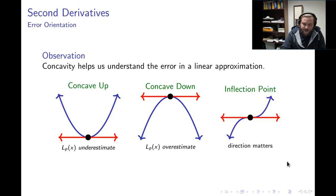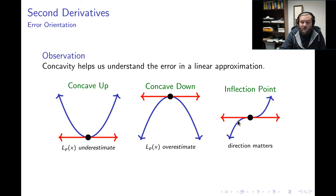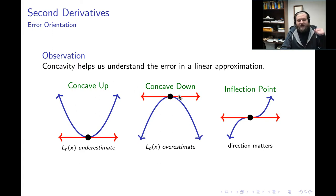The third situation is an inflection point. At an inflection point, the direction you're traveling in matters. In the figure depicted here, if we move a little to the right, we may be an underestimate, but if we move to the left, perhaps an overestimate. So at inflection points the direction matters, whereas if you're concave up you can reasonably expect your linear approximation to be an underestimate, and if you're concave down you can reasonably expect it to be an overestimate.